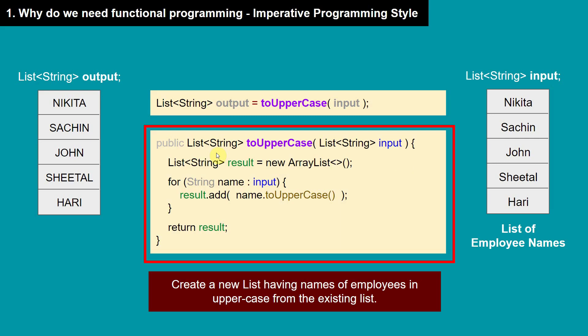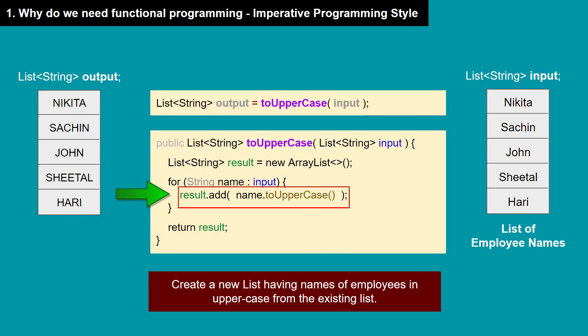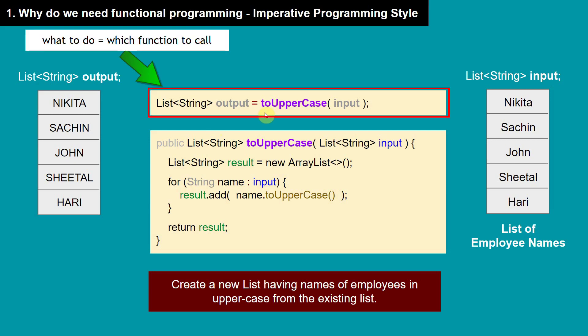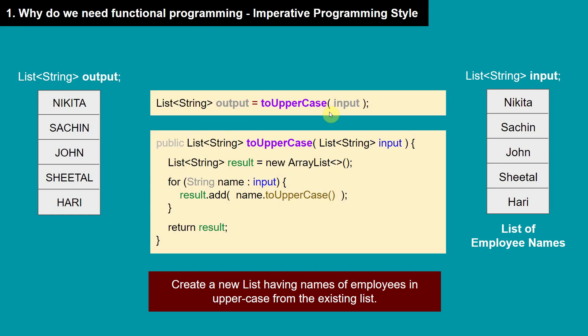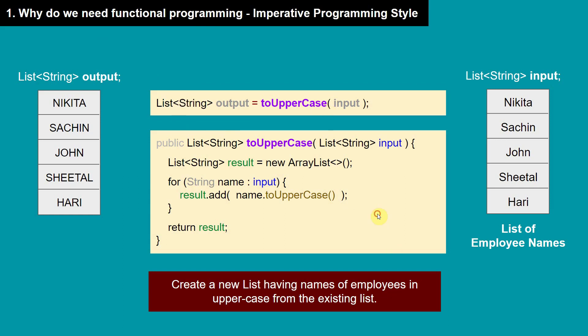But that's not it — we also have to tell Java how to do it. We have to define this method and step by step write the logic: create a new list, iterate over all the elements in the input list, make them uppercase, store each element into a new list, and then return this list. So basically we are telling both what to do and how to do it, and this way of programming is called imperative programming.